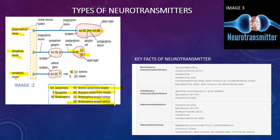Key facts of neurotransmitters: Excitatory neurotransmitters include acetylcholine, histamine, dopamine, norepinephrine, and epinephrine. Inhibitory neurotransmitters include GABA (most important), dopamine, and serotonin. Neuromodulators include dopamine, serotonin, and acetylcholine. Neurohormones include releasing hormones from the hypothalamus such as oxytocin and vasopressin. This completes the entire introduction, classification, mechanism, and functioning of neurotransmitters, neurohumeral transmission, co-transmitter, and co-transmission.